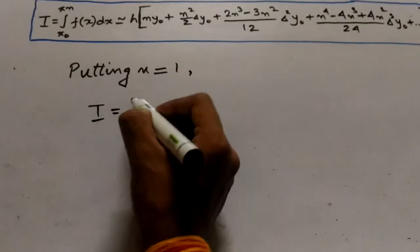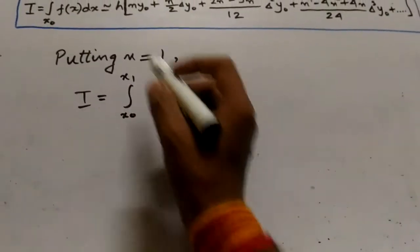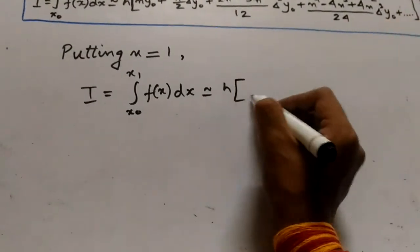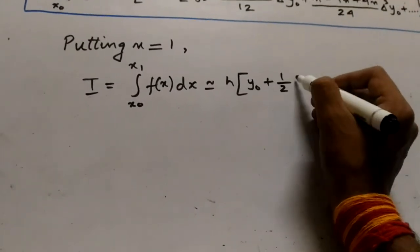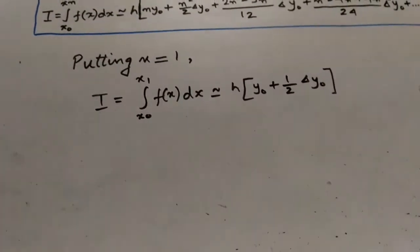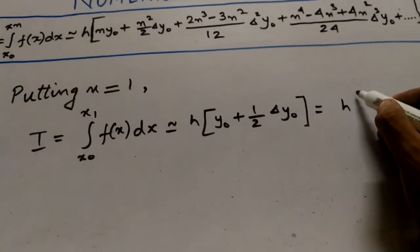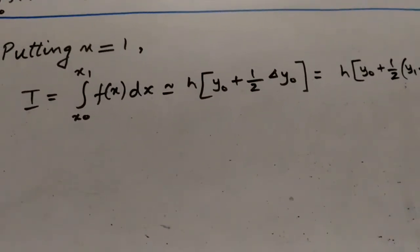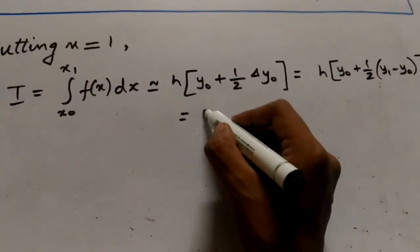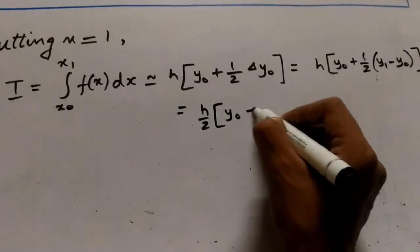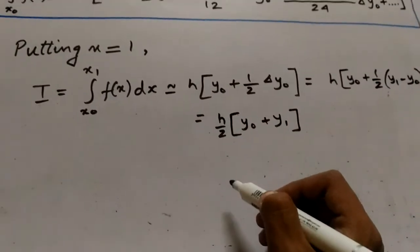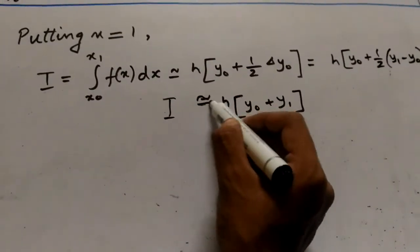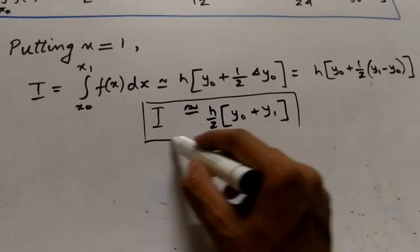In this formula, if we put n equals to 1, we get I equal to the integral from x0 to x1 of f(x) dx, approximately equal to h into y0 plus half Δy0. This equals h into y0 plus half of (y1 minus y0), which simplifies to h/2 into (y0 + y1).